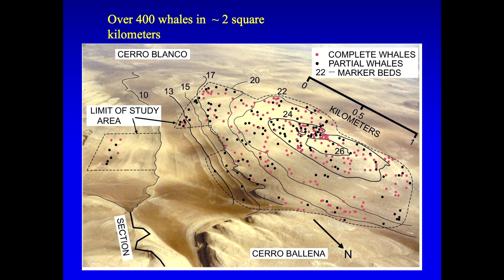Here's an aerial photograph of one of our study areas. And every dot is a fossil whale. So this is about two and a half square kilometers. Over 400 whales. Okay. And this formation goes for several hundred kilometers to the south. So this is an amazing formation.